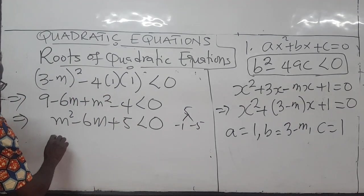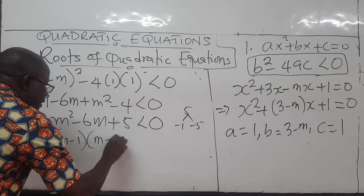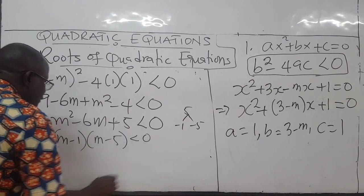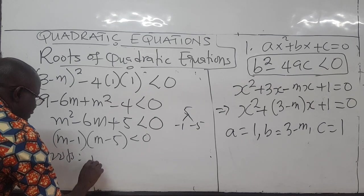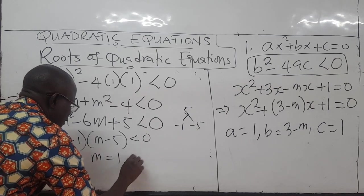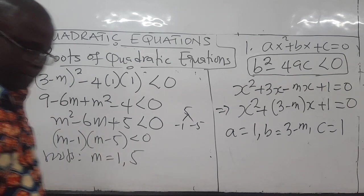So this comes to be written as M minus 1 and M minus 5. So the roots of this equation are M minus 1 and M minus 5.